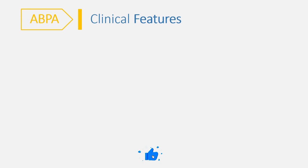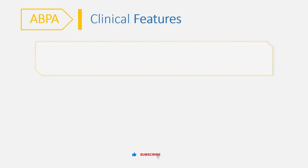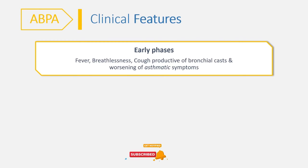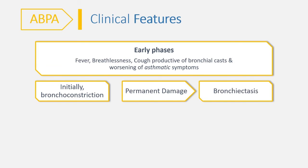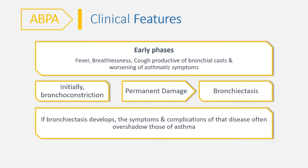Coming to the clinical features of the disease — clinical features depend on the disease stage. Common manifestations during early phases include fever, breathlessness, cough productive of bronchial casts, and worsening of asthmatic symptoms. Initially, there are signs of bronchoconstriction, but with time, permanent bronchiolar wall damage occurs, causing bronchiectasis. When bronchiectasis develops, the symptoms and complications of that disease often overshadow asthma symptoms.